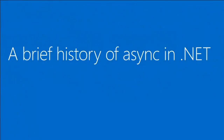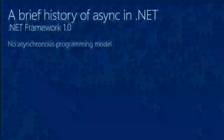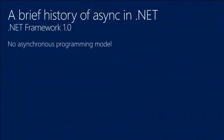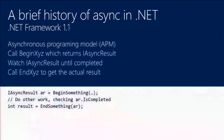Let's get started with a brief history of async in .NET. In 1.0 we had no asynchronous programming model. Then in .NET 1.1 we added the APM — the Asynchronous Programming Model. Some of you may have used this before. This resulted in code where you call Begin Something, you get back an IAsyncResult, you do some work, and you continuously poll IAsyncResult to find out whether the work is done. And then when it is done, you call End Something, and that gives you back the result from your asynchronous work.